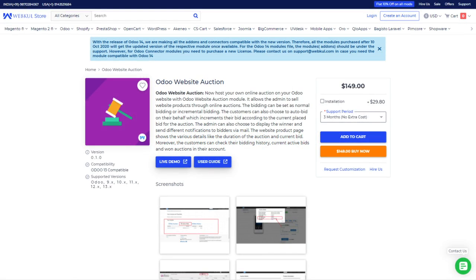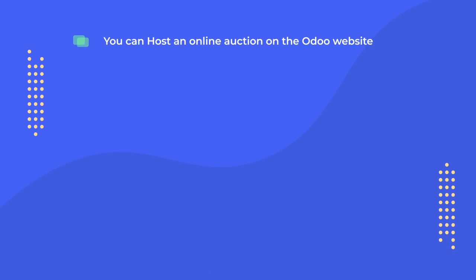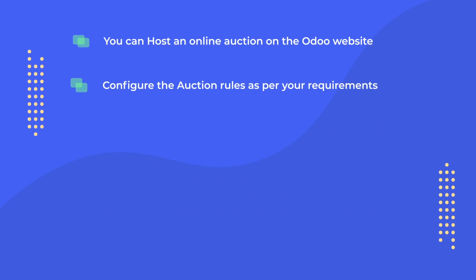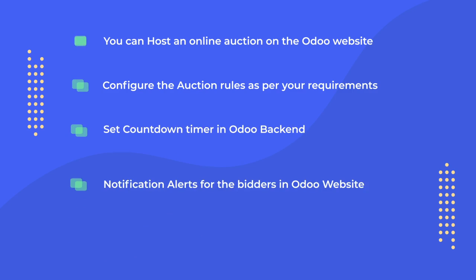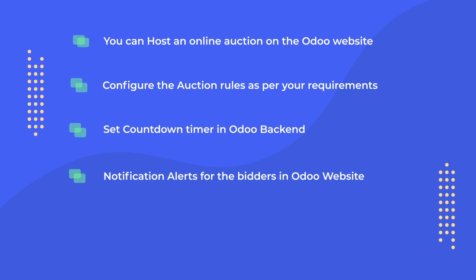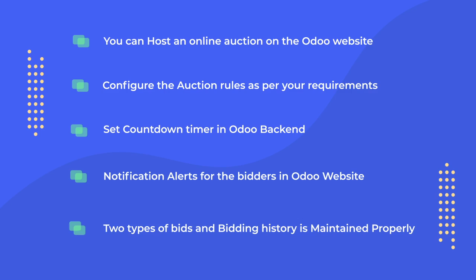Hello everyone, welcome back to Webcool Odoo Modules Tutorial. Today in this video we will discuss the configuration and workflow of our module, Odoo Website Auction. Here are some features of the module: you can host an online auction on the Odoo website, configure the auction rules as per your requirements, set a countdown timer in the Odoo backend, and get notification alerts for bidders on the website. There are two types of bids for customers.